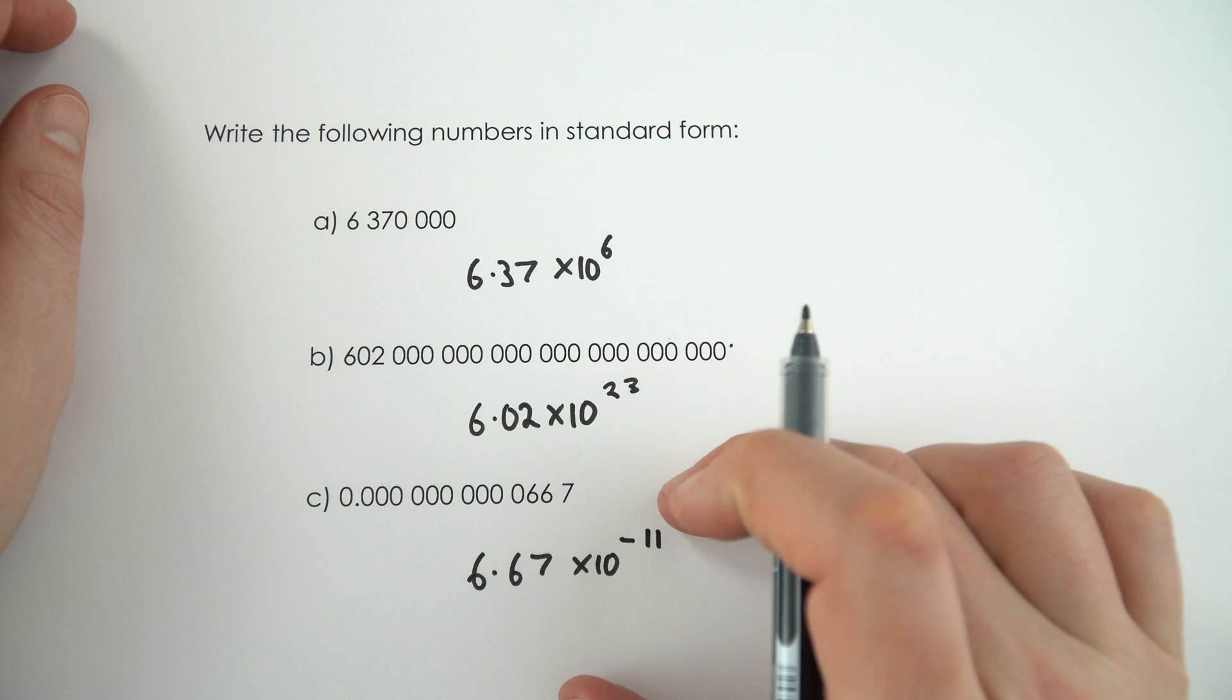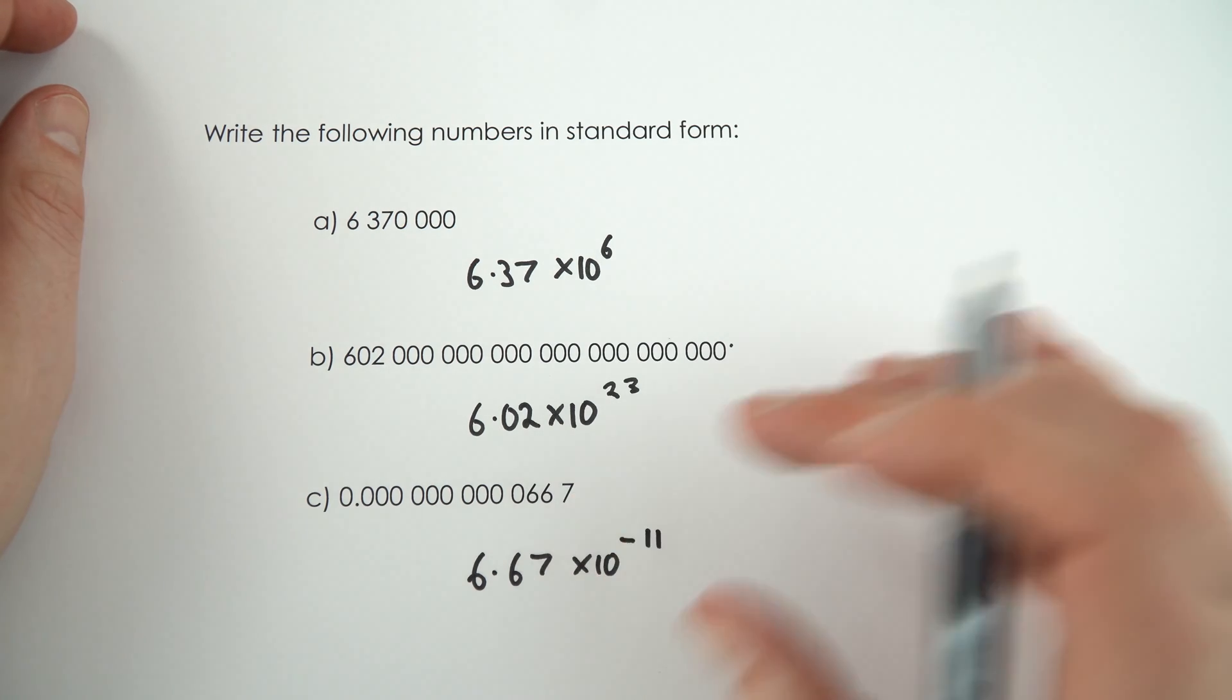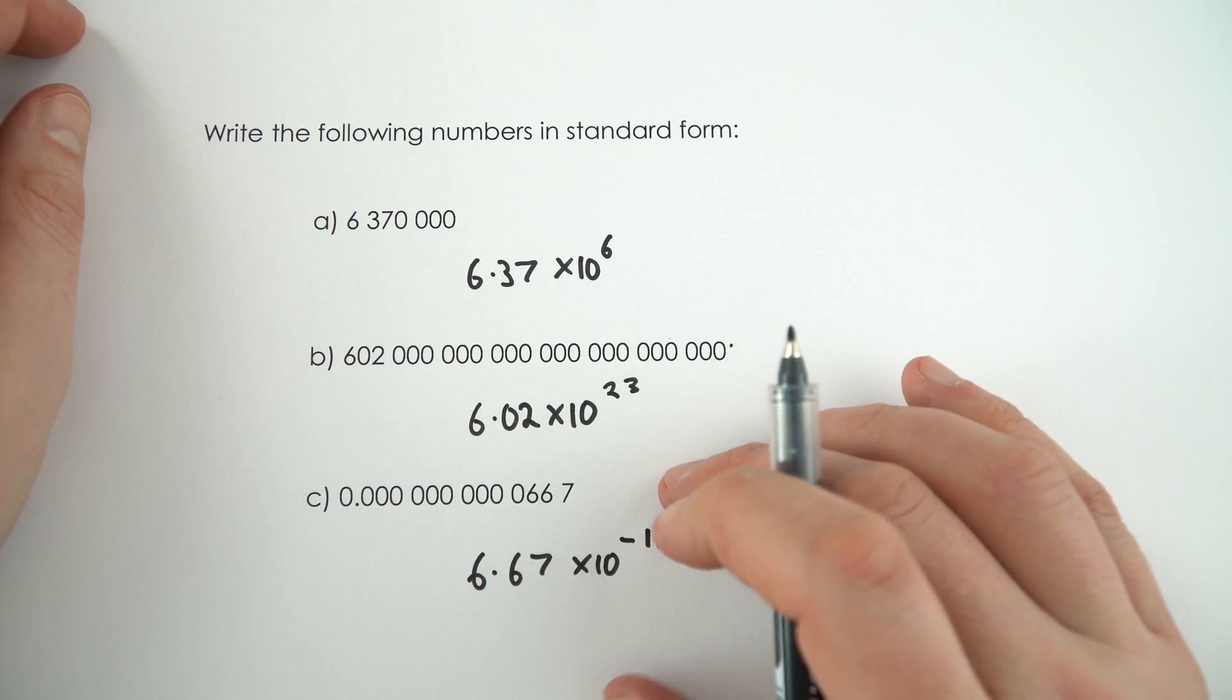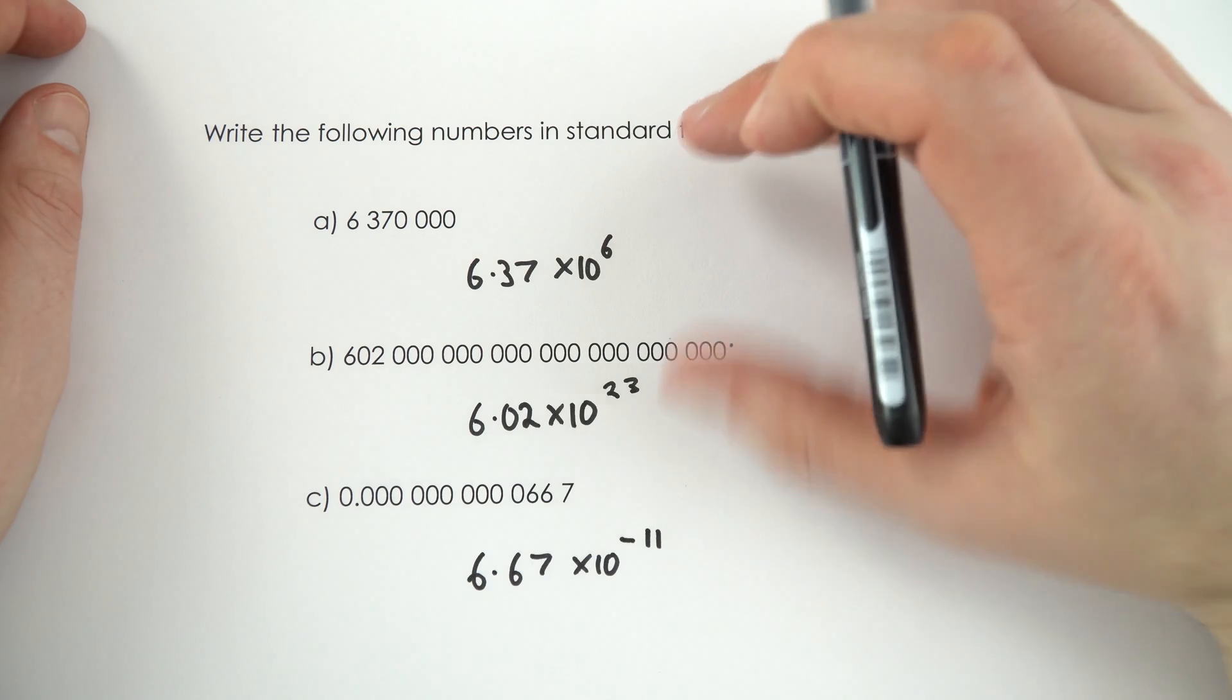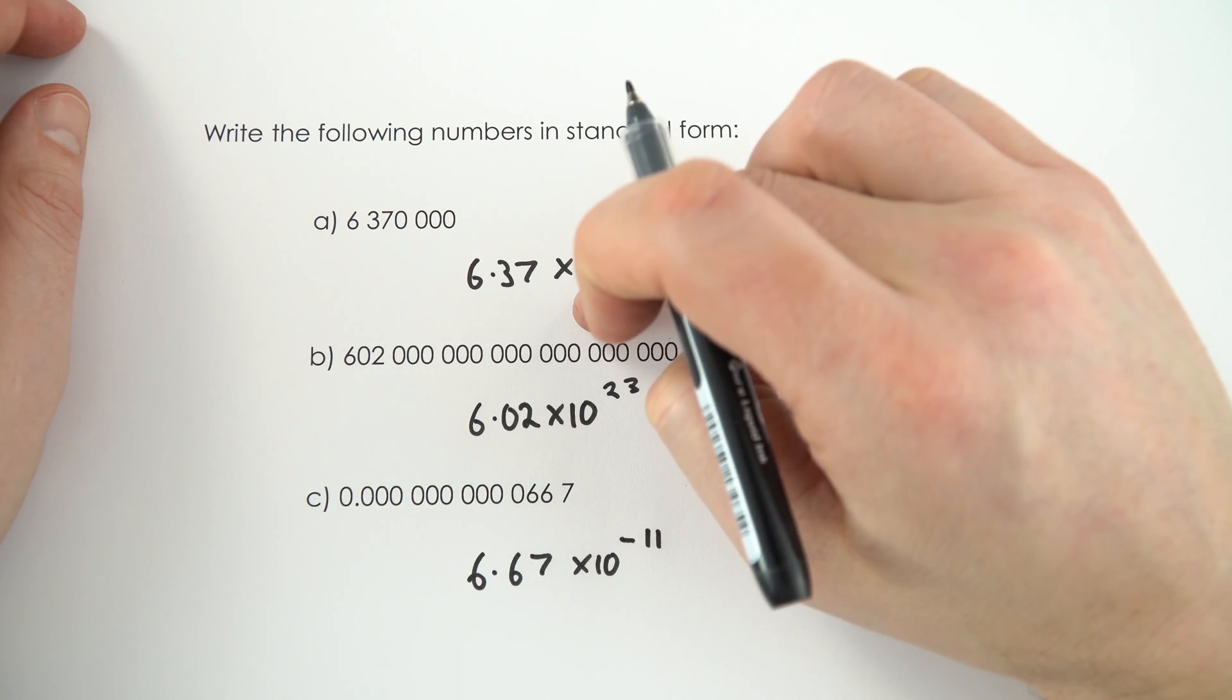This is known as big G and it's a constant for gravity that you might come across in A-level physics. So here are just a couple of quick examples about how to display these numbers in standard form.